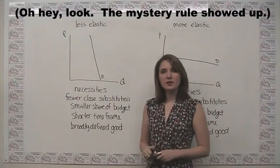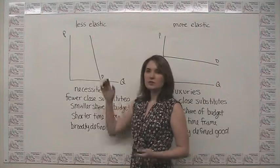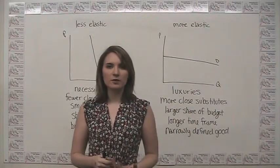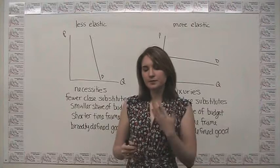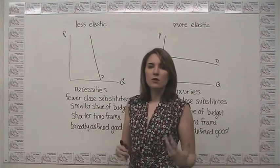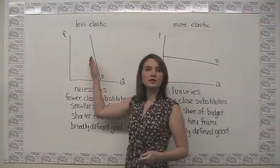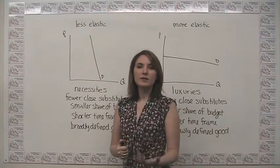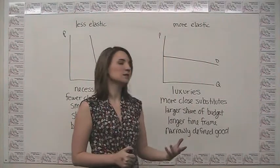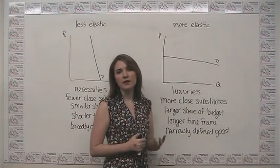The time frame we're considering also has an effect on elasticity. Over a shorter time horizon, we'll generally see less elastic demand because we don't have much opportunity to change our consumption behavior. For example, consider demand for gasoline over the next two weeks versus six months. Over two weeks, you're stuck with your job and your car, and you probably can't change your behavior much. Over six months, there's a lot more you can do to switch away from gasoline — so a longer time horizon produces higher elasticity of demand.